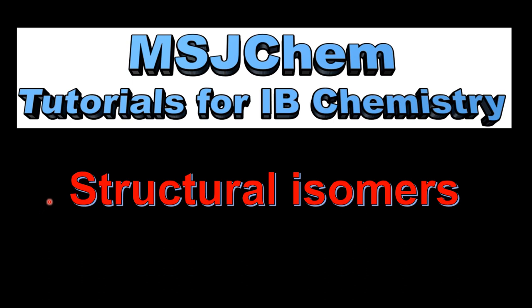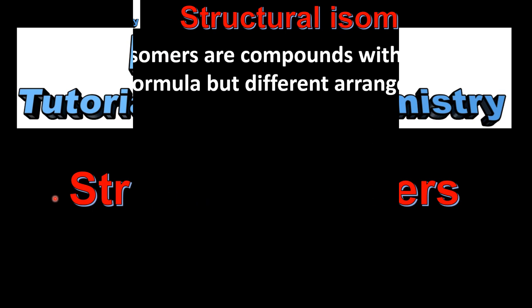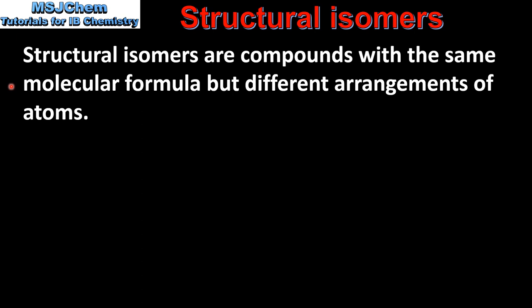This is MSJChem. In this video I'll be looking at structural isomers. So let's start with a definition. Structural isomers are compounds with the same molecular formula but different arrangements of atoms.